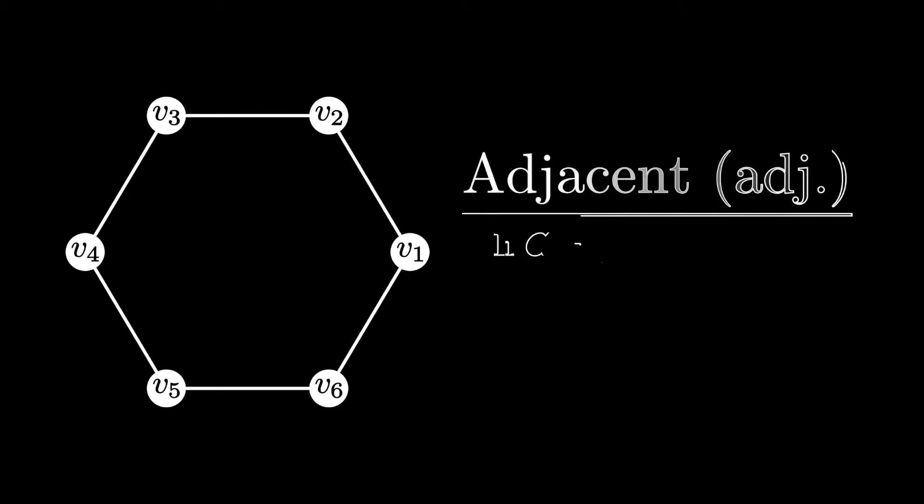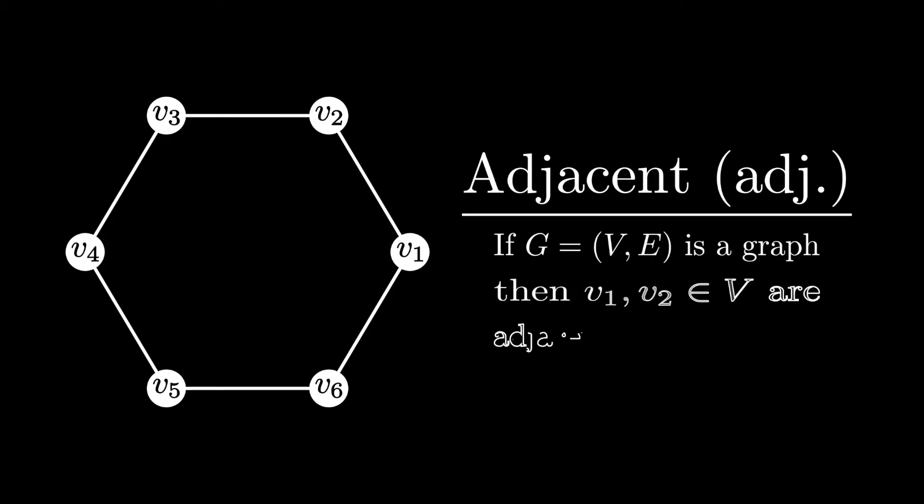More rigorously, we say that if g is a graph, and v1 and v2 are a part of the vertex set, then v1 and v2 are adjacent if the tuple v1 v2 is an element of the edge set.